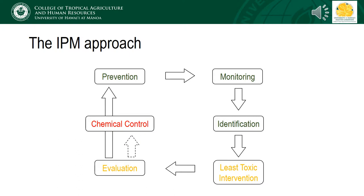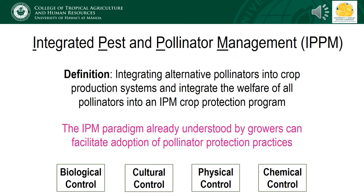Evaluate after a treatment to determine whether the pest was reduced below economic thresholds. If so, go back to preventative measures to minimize the likelihood of that pest becoming an issue again. If these toxic interventions prove unsuccessful, it is okay to choose a chemical control method. Just like farming, home gardening is a lot of work and you shouldn't be afraid to use all the tools available to control pests. But by using them in the context of an IPM framework, you will hopefully be minimizing chemical inputs and lessening non-target effects to beneficial insects in the environment.